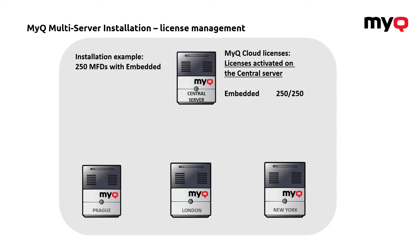An important thing is that the central server cannot actually print. To be able to print, we have to put that license on a print server. When we are creating a site, we can say how many licenses should be assigned to that site. For example, I've put 100 embedded licenses to the Prague server, so there are only 150 remaining on the central server. We'll assign an additional 100 to London and the remaining 50 to New York.